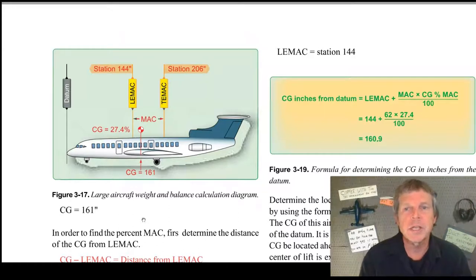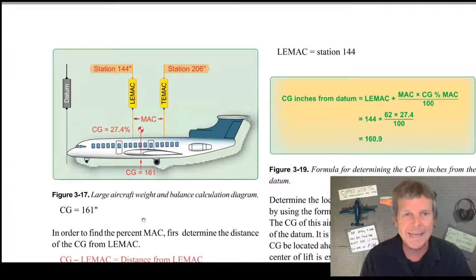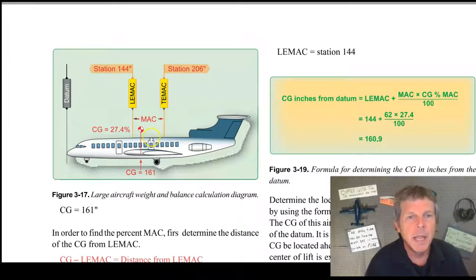Now the calculations come into it because a lot of our calculations early on have been where we've used the numbering system of the airplane. Well now when we go to mean aerodynamic chord we are going to use the numbering system of the wing. You can see they put the station, the numbering system for the airplane, at station 144 where the leading edge is on the mean aerodynamic chord, and at station 206 is where the trailing edge is on the mean aerodynamic chord line. They must have calculated a CG at 161. So that's the numbering line for the airplane.